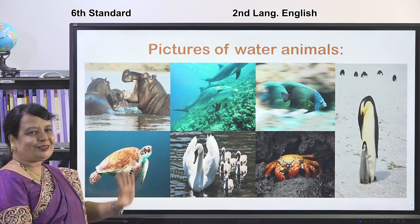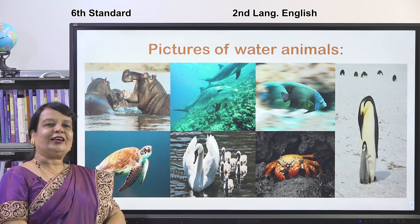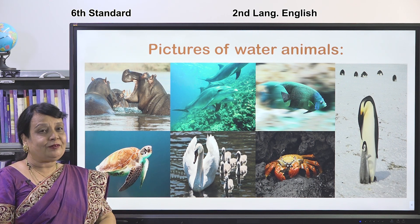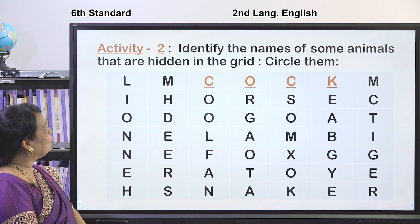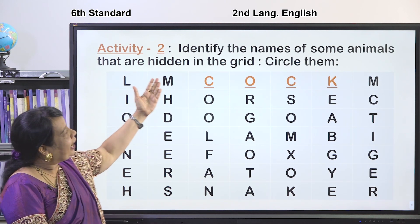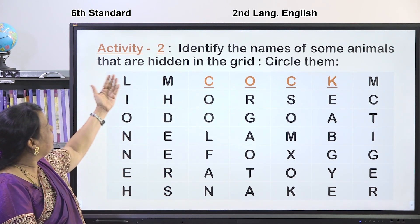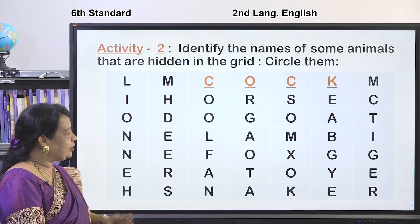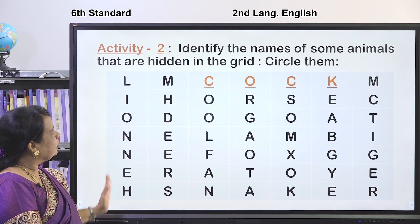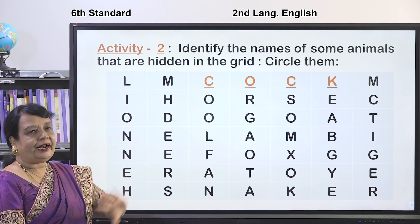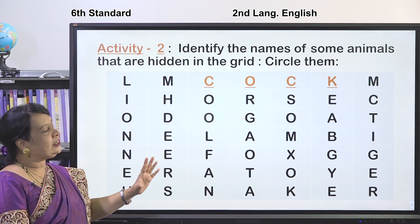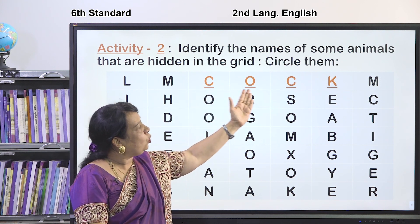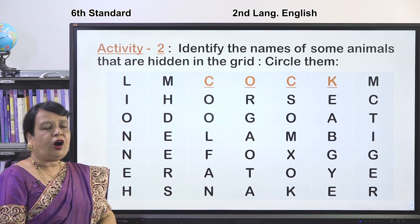Did you enjoy the pictures, children? You can collect pictures like this and make a project. We will go for Activity 2: identify the names of some animals hidden in the grid and circle them. I have shown you a grid with many letters — find the animals hidden in it. The first one is done for you: C-O-C-K, cock.